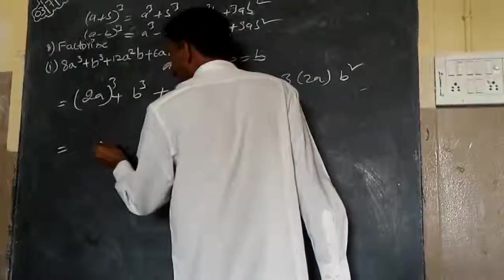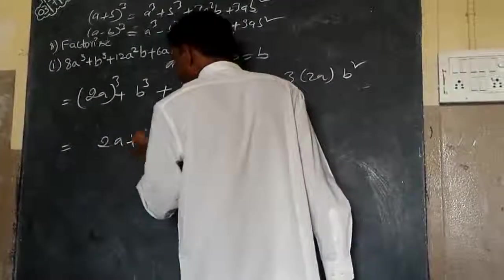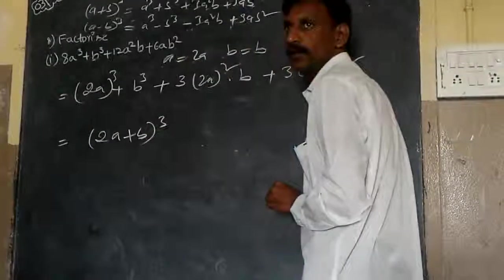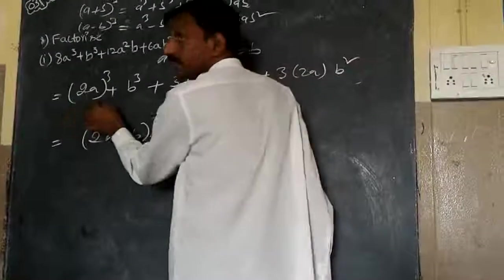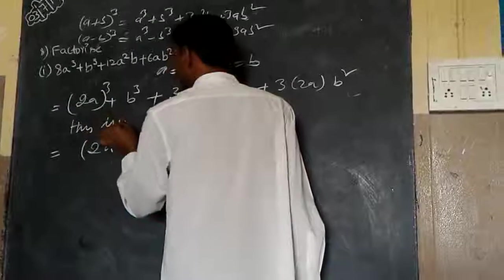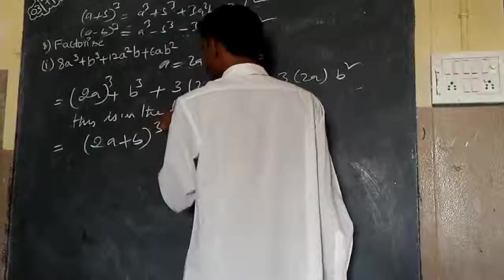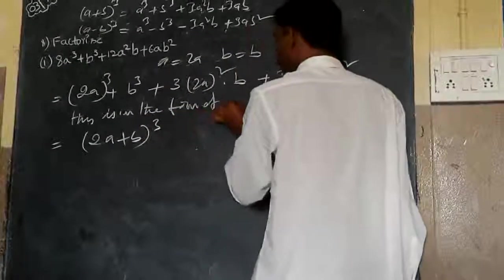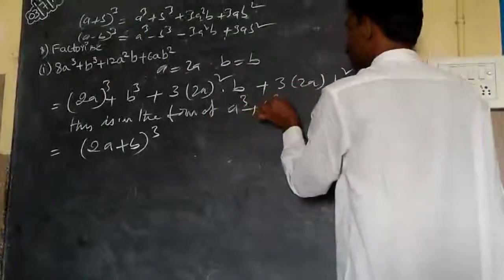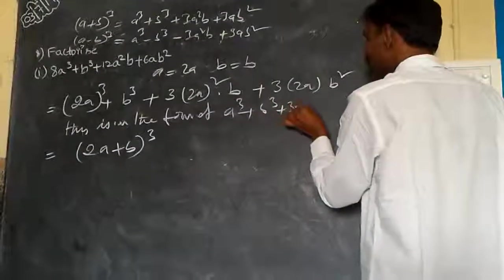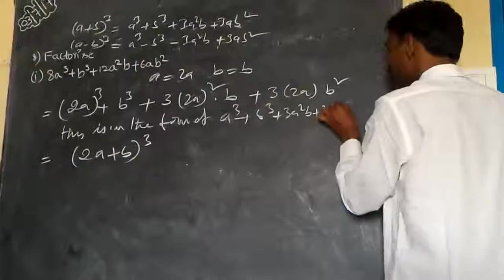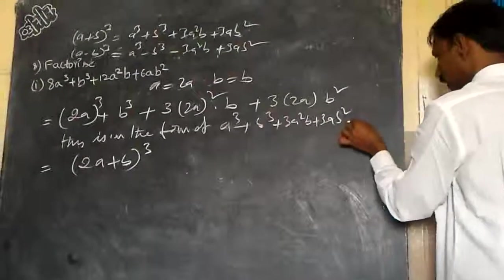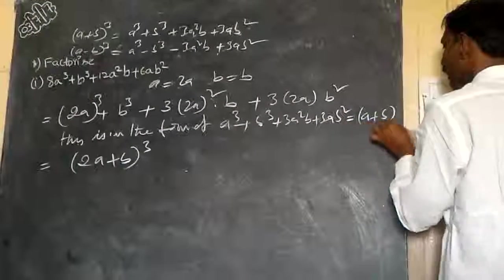Therefore I can write it down (2a+b)³. Because this is in the form of a³ + b³ + 3a²b + 3ab² is equals to (a+b)³.